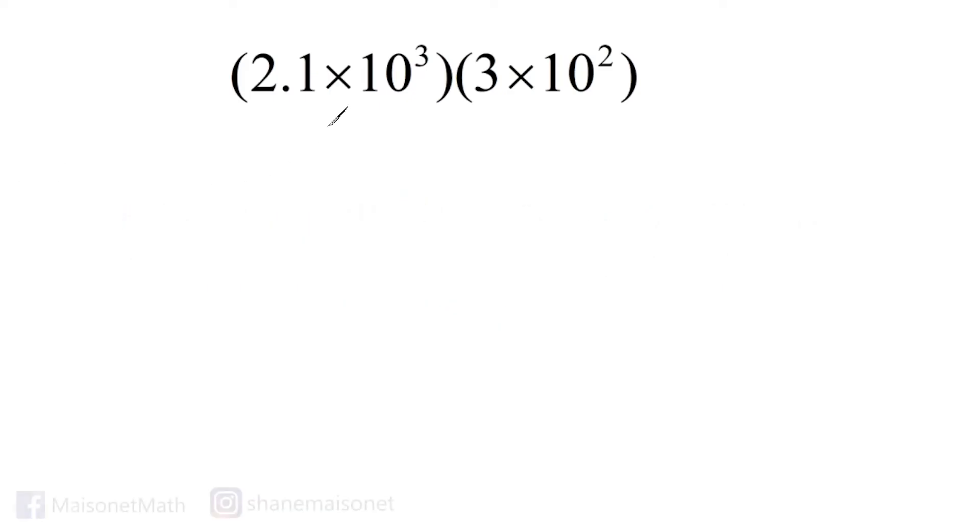Now, if you ever see two expressions written in scientific notation inside parentheses with no sign in the middle, that means they are being multiplied together. Whenever you have two sets of parentheses next to each other with no sign in the middle of those sets of parentheses, then we are multiplying those values together.